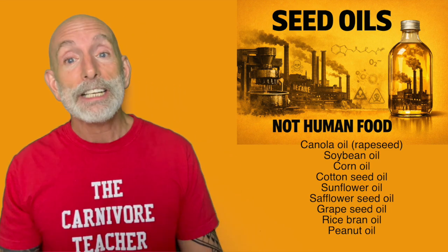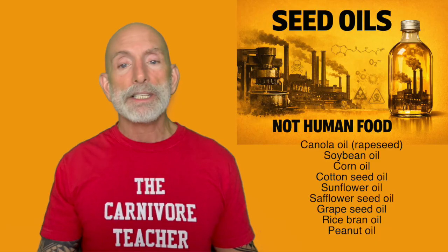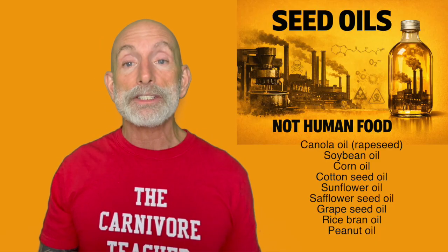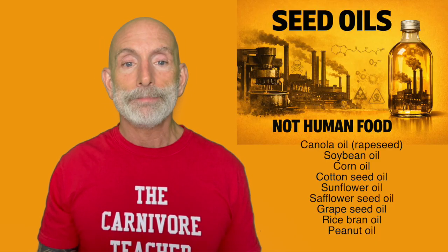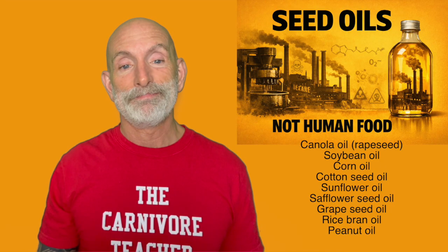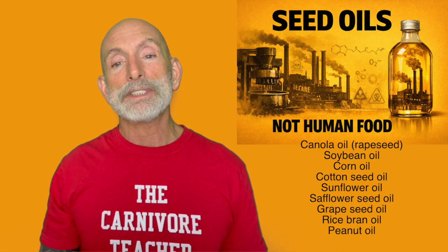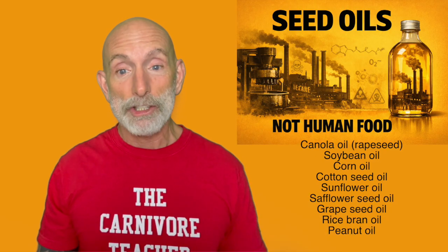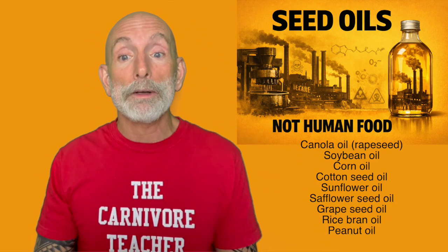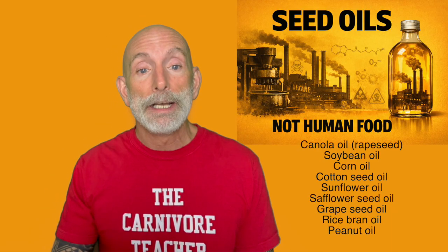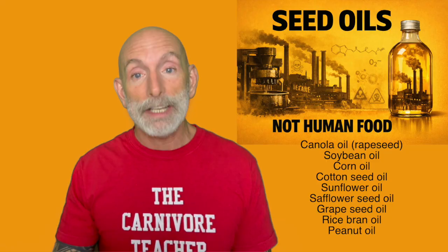Step 1: Collection and cleaning. Seeds from corn, soybeans, cotton, rapeseed, or other plants are collected. They are dusty, pesticide-coated, sprayed with herbicides, exposed to mold, fungal toxins, and oxidation. They must be cleaned to remove debris, soil, husks, and contaminants. But cleaning does not remove pesticides — those remain in the oil.